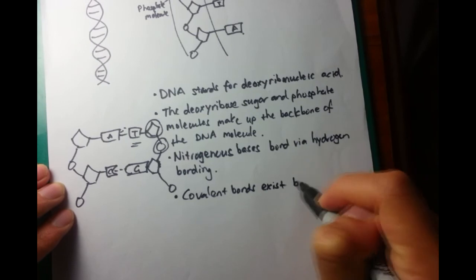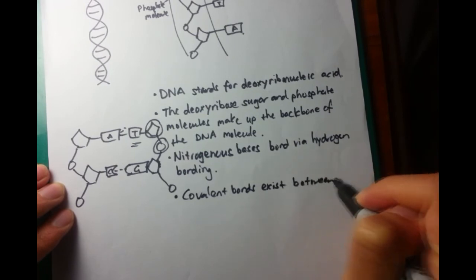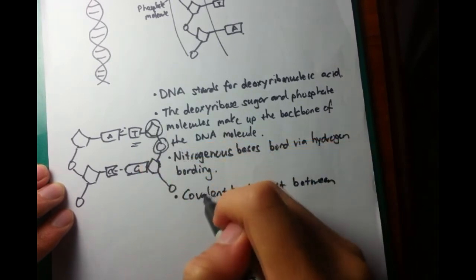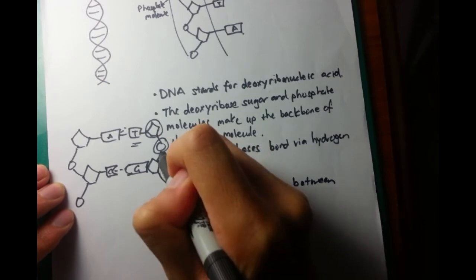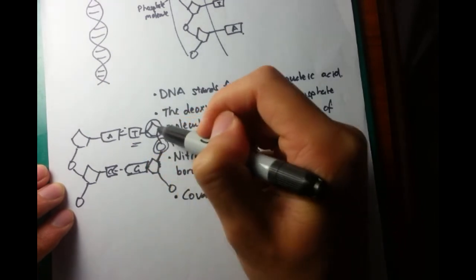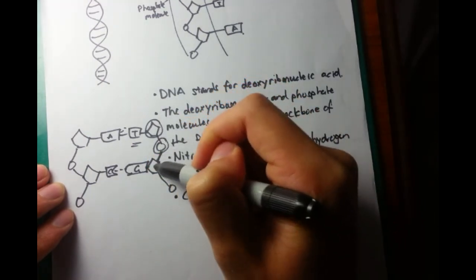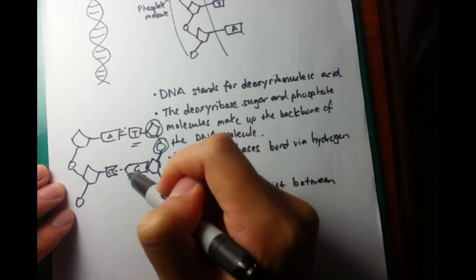The final thing is that covalent bonds exist between, so that's these solid lines. So they exist between sugar and phosphate, phosphate and sugar, and sugar and nitrogenous base.